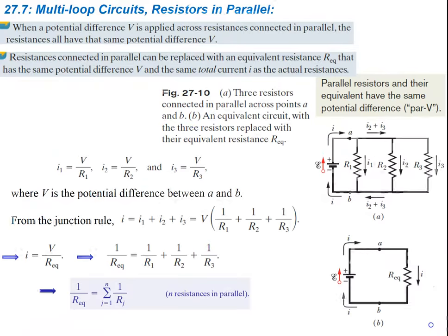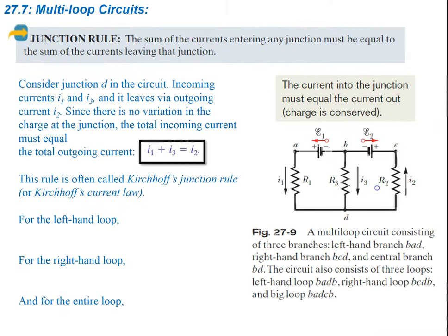We have an example here. You have a junction here and another junction here. All the currents entering this junction must equal all the currents leaving this junction. I2 is going to be entering the junction, because the current is flowing around this way, and then leaving through I1 and I3. So the junction rule says that I2 is equal to I1 plus I3.